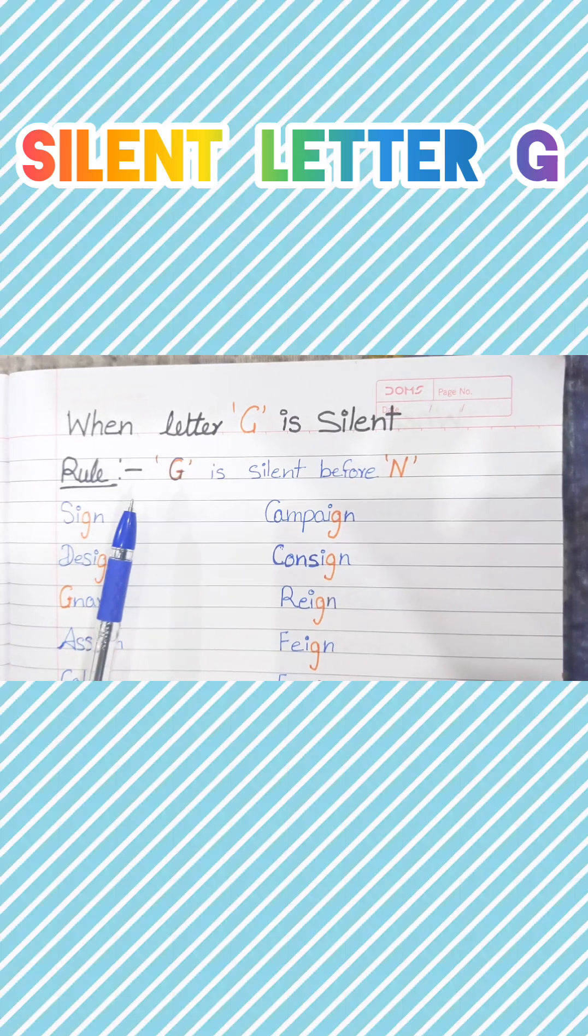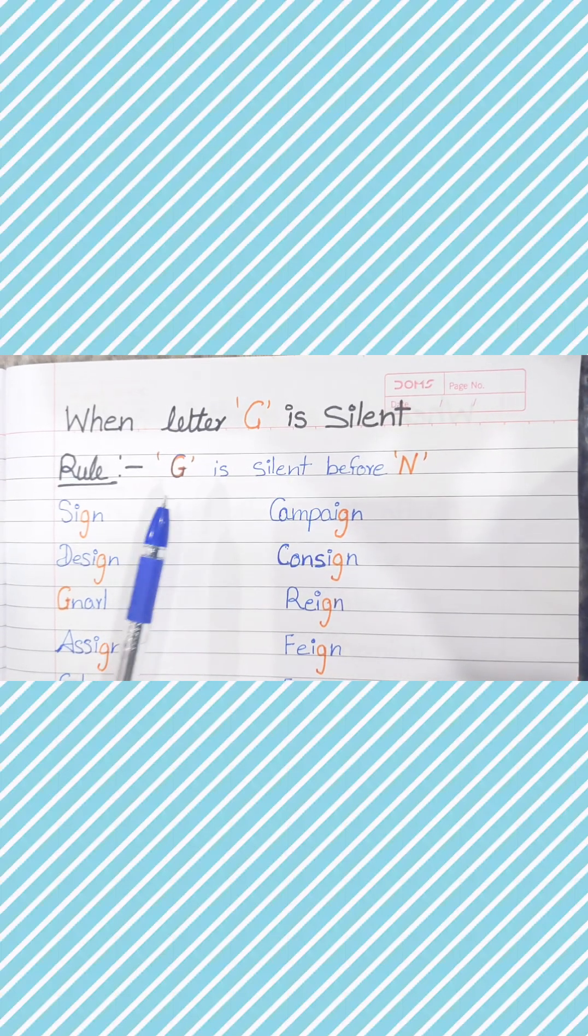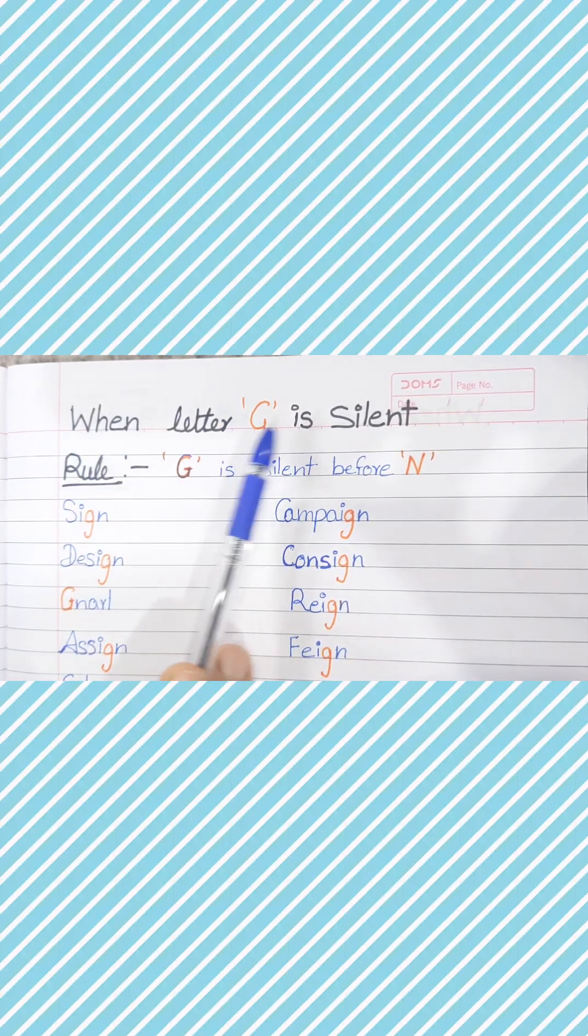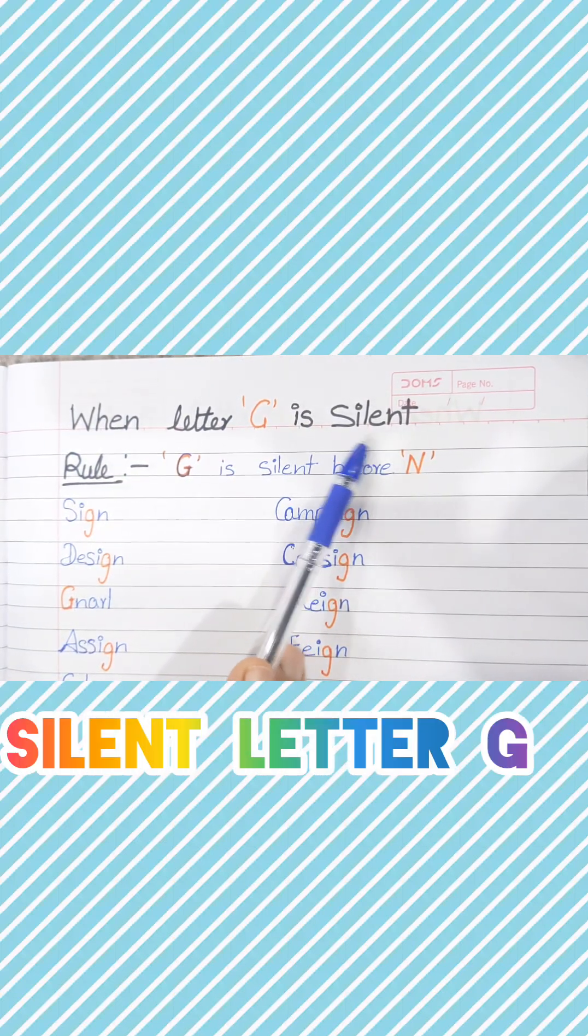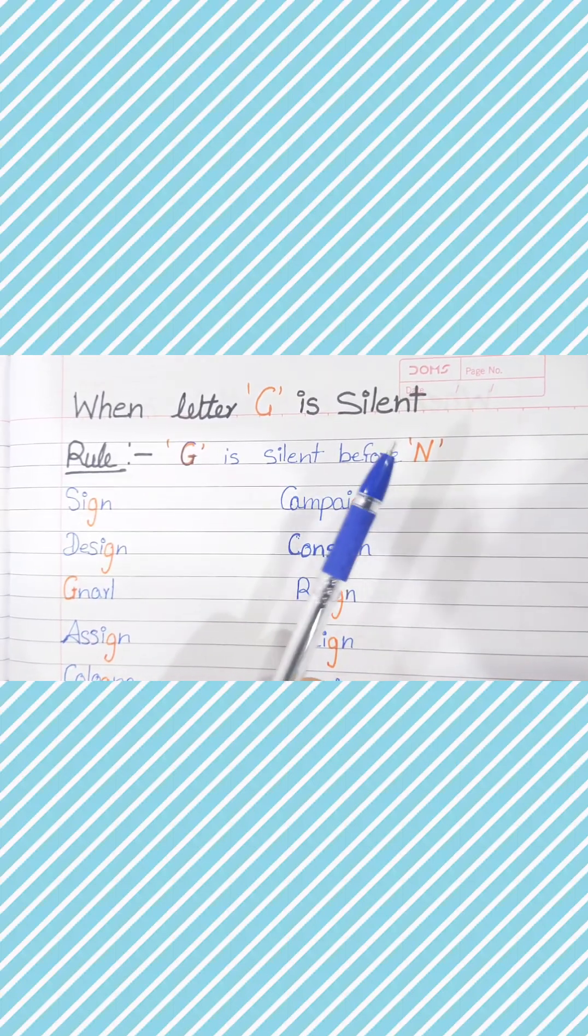Hello friends and children, welcome back to Alphanum's Academy. Dear friends and children, today I present Letter G is silent, with the rules also. So what is the rule? G is silent before N.